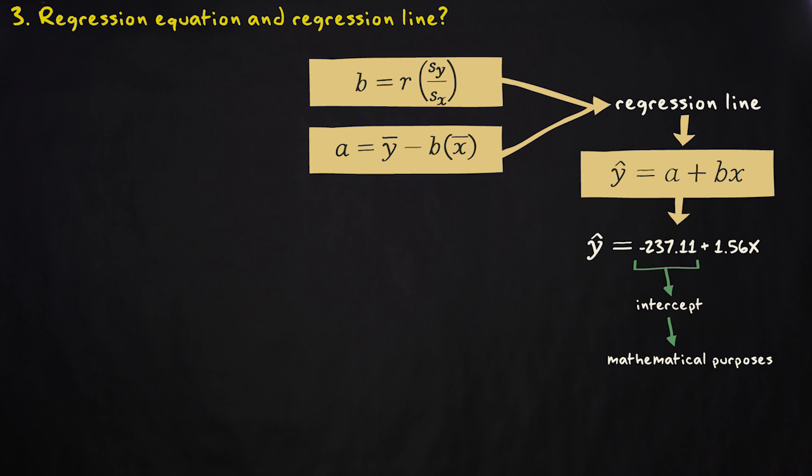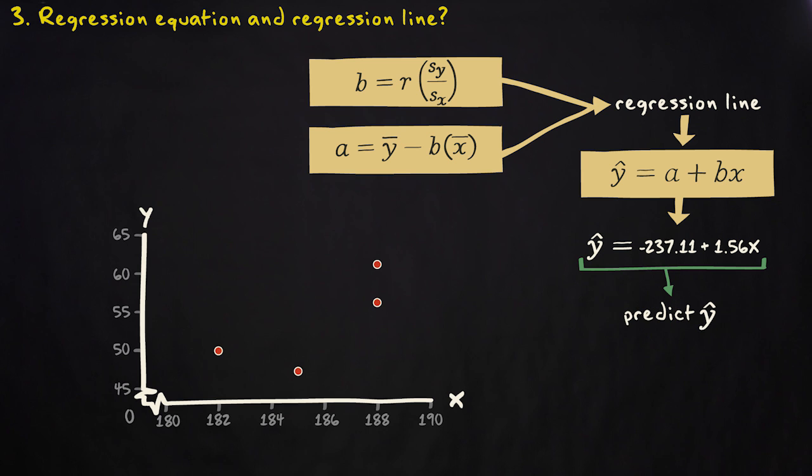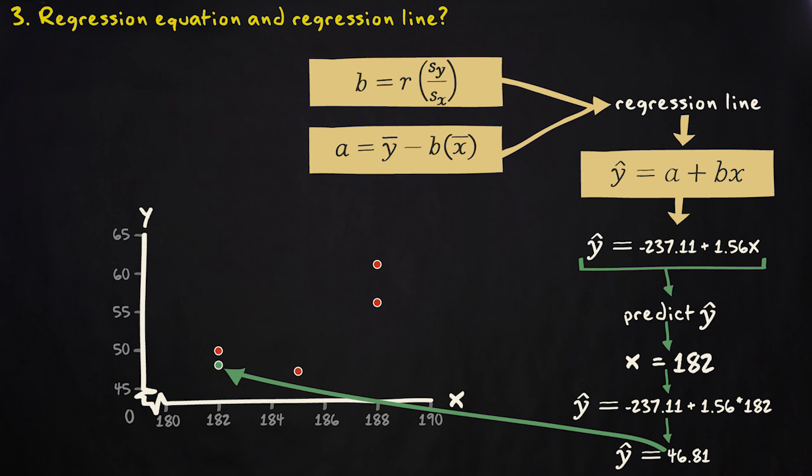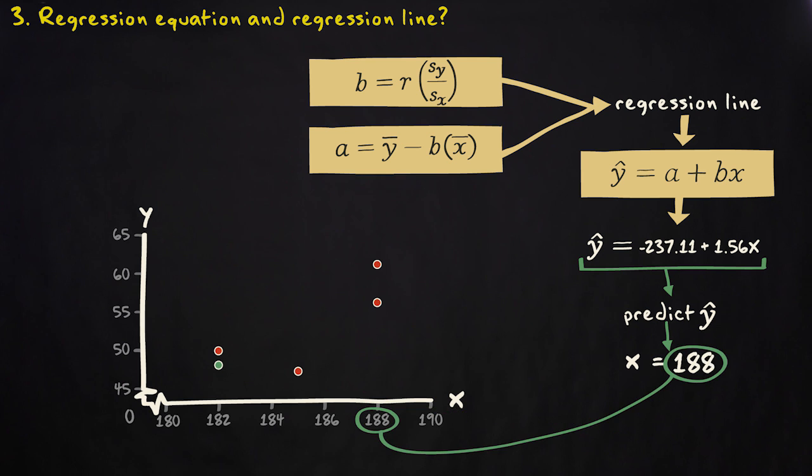With the regression equation found, we can predict the value of our dependent variable when our independent variable equals 182 centimeters, the minimum value in the sample. That's minus 237.11 plus 1.56 times 182. That makes 46.81. That's here. We can also do that for our maximum value. That's minus 237.11 plus 1.56 multiplied with 188. That's 56.17. And that's here.